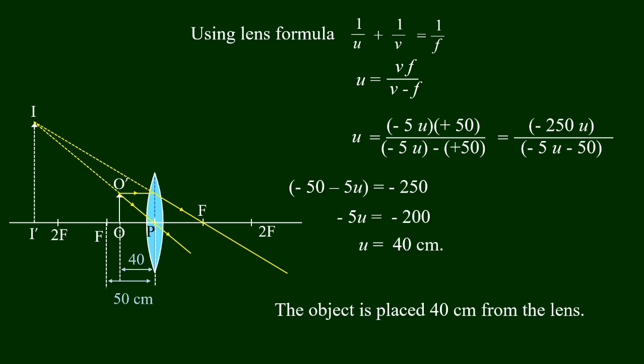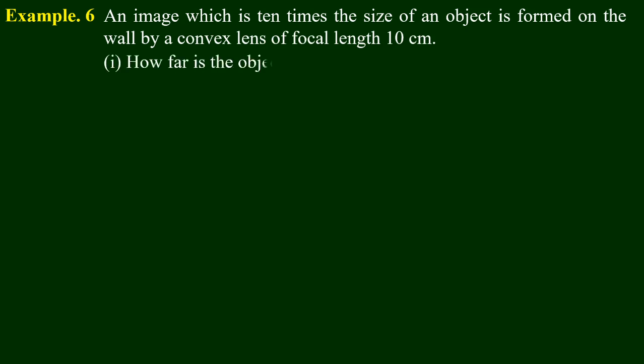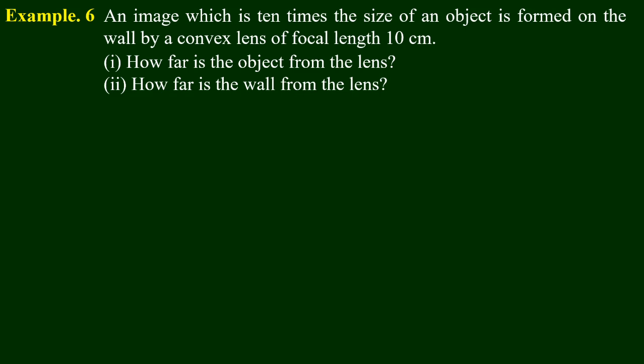The object is placed 40 cm from the lens, and the image is formed on the wall by a convex lens of 50 cm. How far is the object from the lens? How far is the wall from the lens?